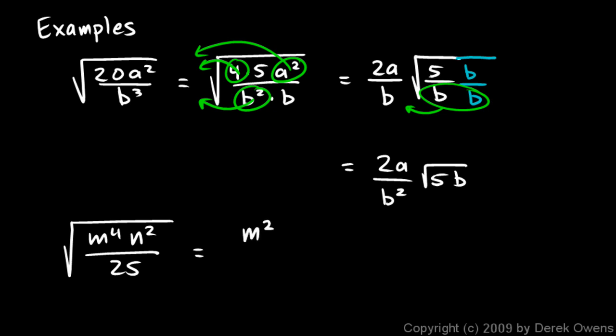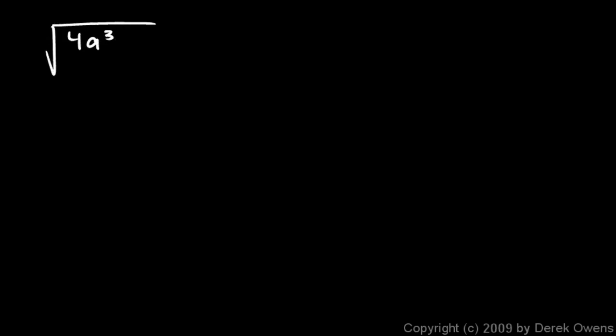So we get m squared times n in the numerator and a 5 in the denominator — m squared n over 5. That one was pretty easy. This next one is a little bit more challenging, and it's going to involve getting rid of the fraction as well. The square root of 4a cubed b squared over 9c to the fifth.